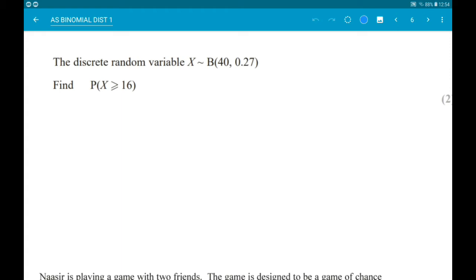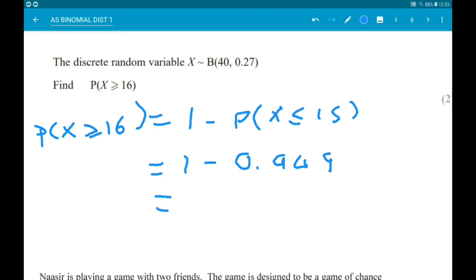So we need to work out the probability of 1 minus the probability x is less than or equal to 15. Now that is going to give us 1 minus 0.949, which then gives us 0.051.